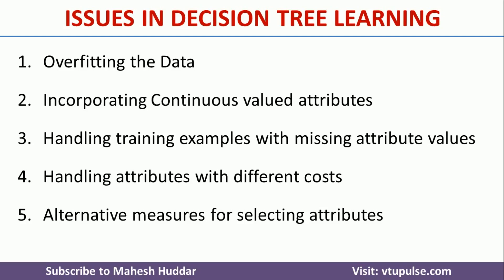But do we have any other method rather than considering the information gain? That is another issue in decision tree. Why we need to consider another measure is, while calculating the information gain, we give more importance to the values or the attributes which are having more common class.